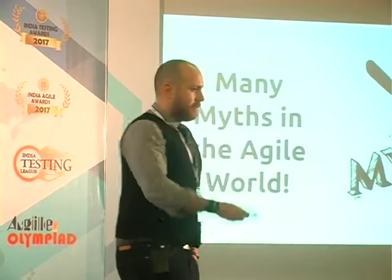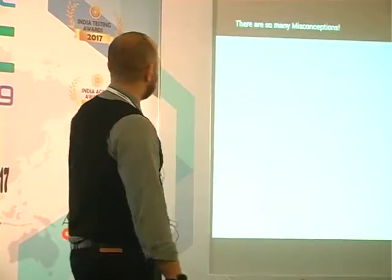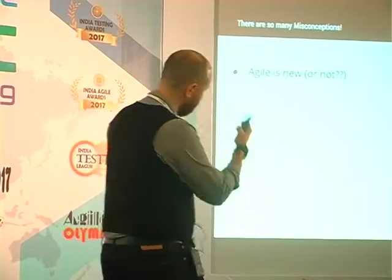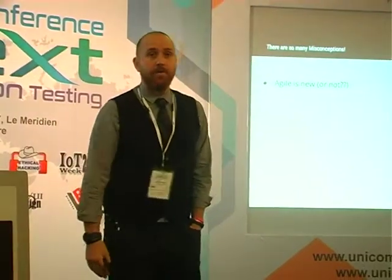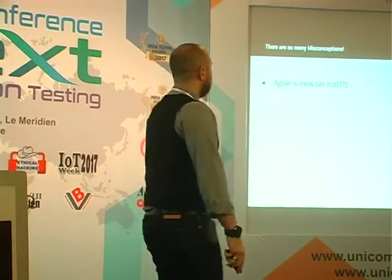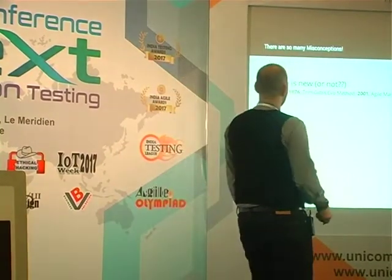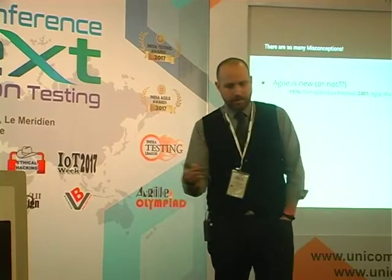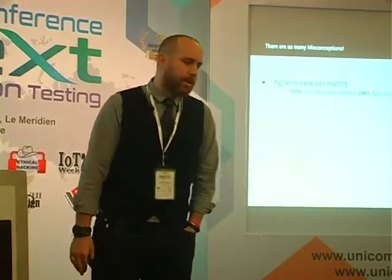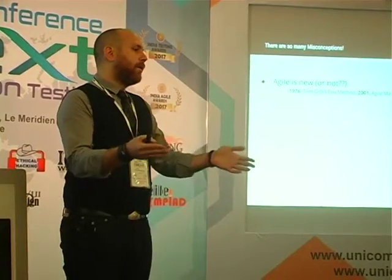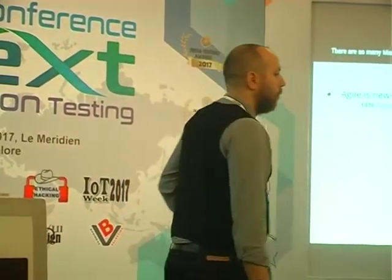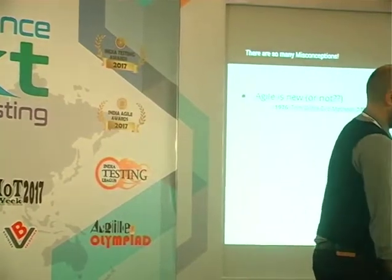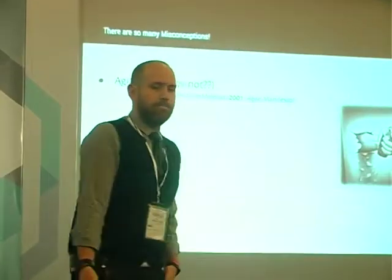There are so many myths in this area, so many misconceptions. The first one: agile is new. People look at it like it's rocket science, something very new. But it's not that new — it comes from Tom Gilb's evolutionary method from 1976. He says in the book that you need to divide and conquer: split the whole thing into smaller portions and develop them. The agile manifesto itself was developed in 2001.